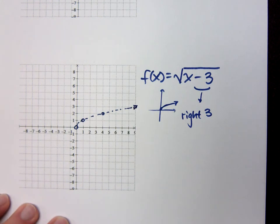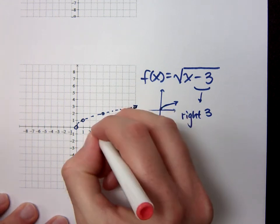And now what am I doing? I'm moving all those guys where? To the right, 3 units. So I'm going to start right here.